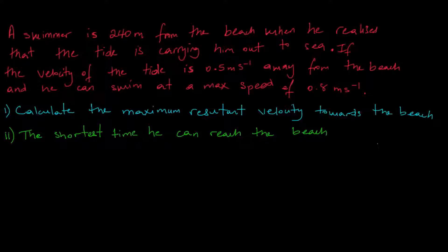A swimmer is 240 meters from the beach when he realizes that the tide is carrying him out to sea. If the velocity of the tide is 0.5 meters per second in the direction away from the beach and the swimmer can swim at a maximum speed of 0.8 meters per second, part one in the question says calculate the maximum resultant velocity towards the beach.